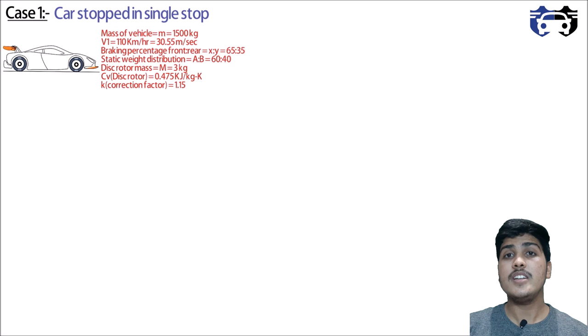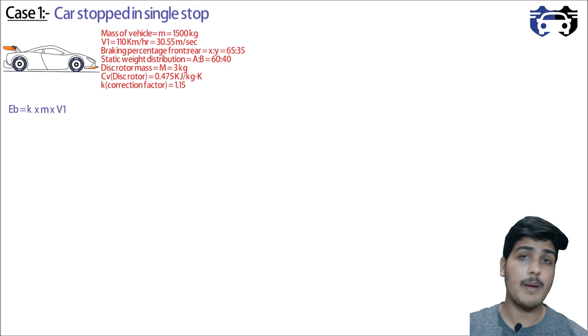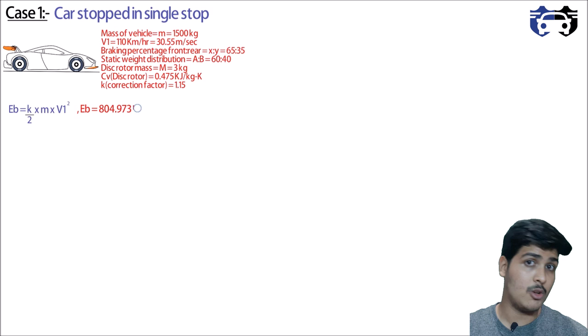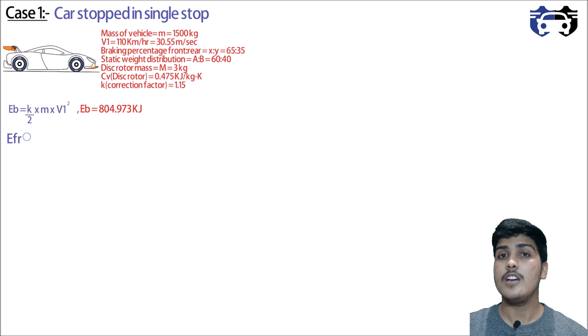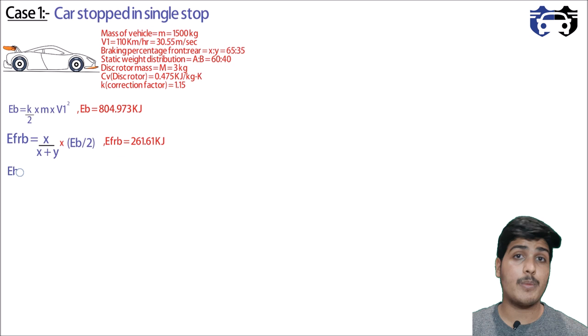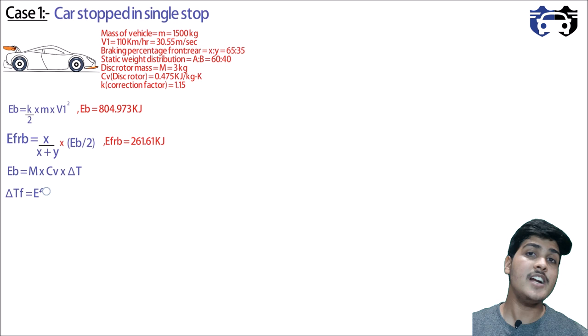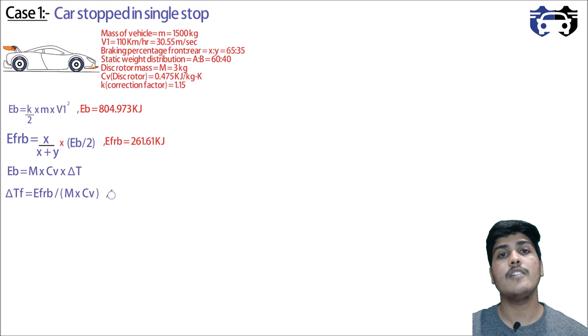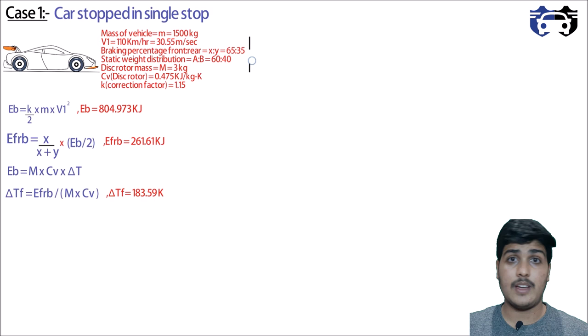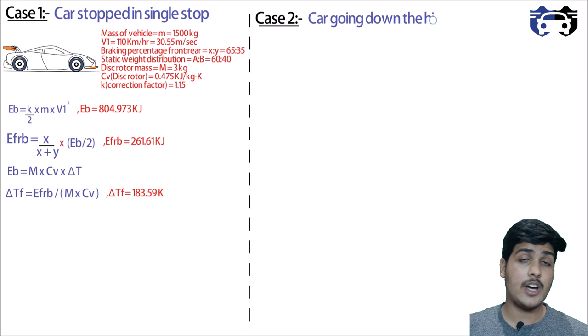Let's take an example with given car specifications. For Case 1, the energy absorbed in a single stop is eb equals k·m·v1²/2, giving eb equals 804.973 kilojoules. The energy absorbed by the front brake rotor is efrb equals (x/(x+y))·(eb/2), giving efrb equals 261.61 kilojoules. Therefore, the temperature rise for the front rotor is delta-Tf equals efrb/(m·cv), giving delta-Tf equals 183.59 Kelvin.